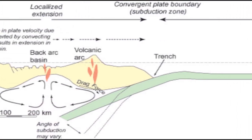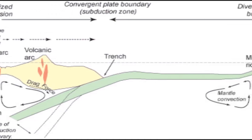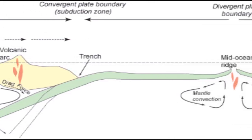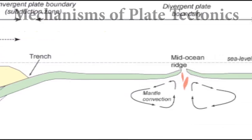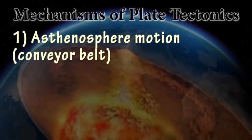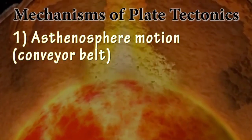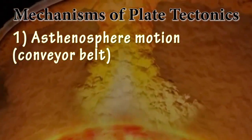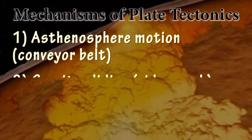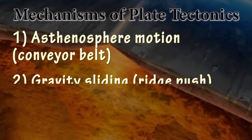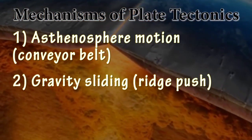To recap, our big three mechanisms to drive seafloor spreading, and thus plate tectonics with their attached drifting continents, are: conveyor belt motion of the asthenosphere driven by radioactive decay adding heat to the interior of the Earth; gravity sliding, also known as ridge push.